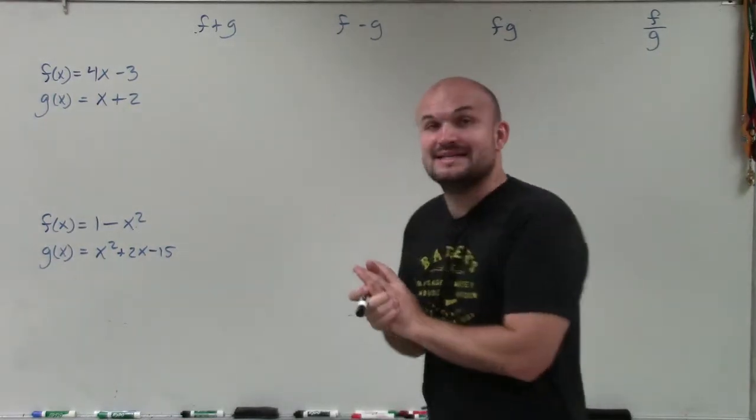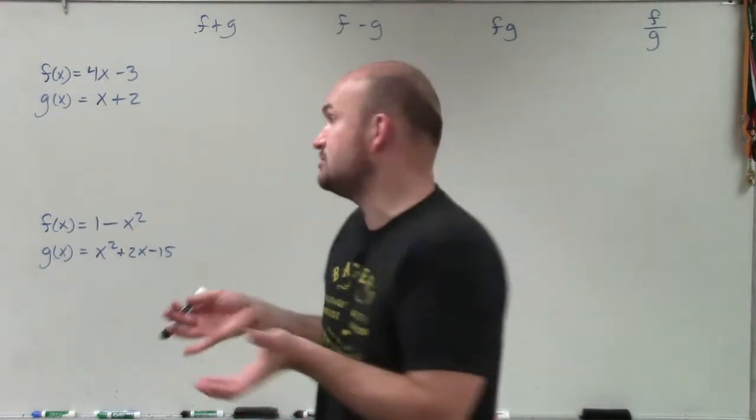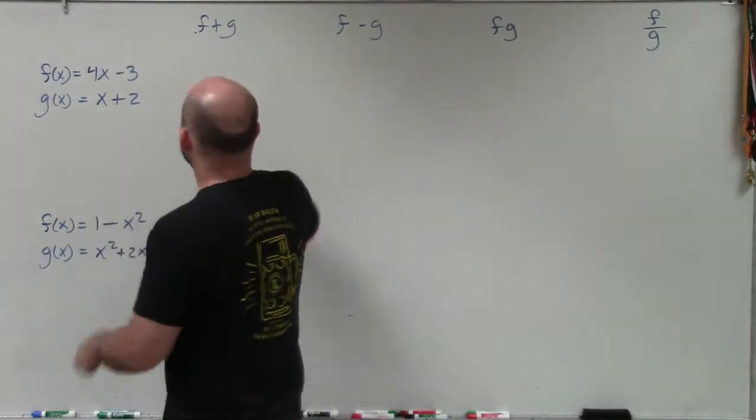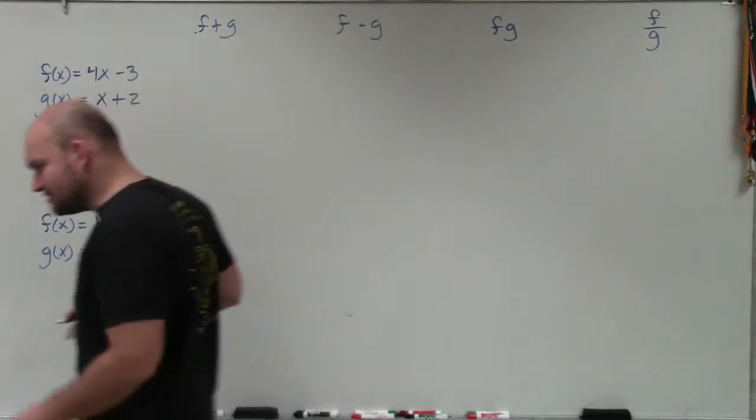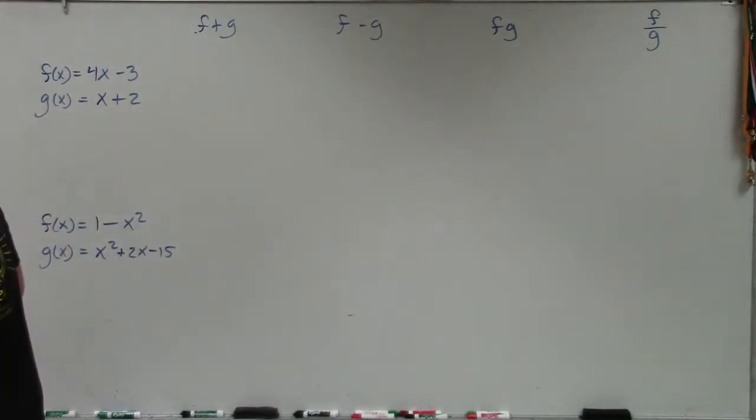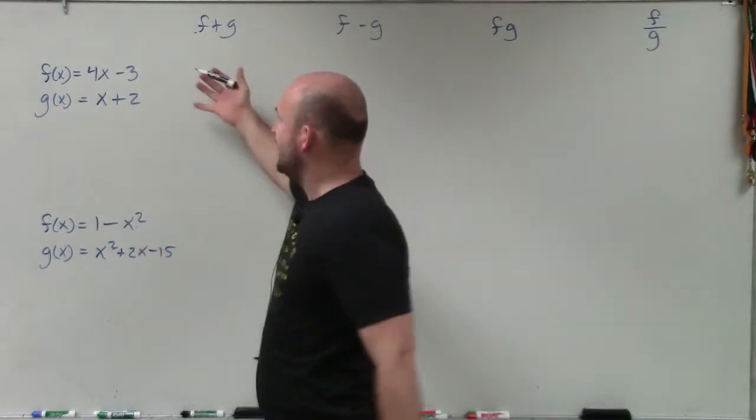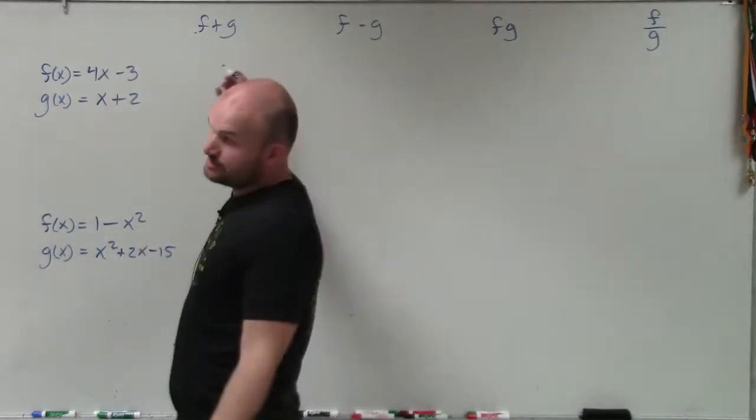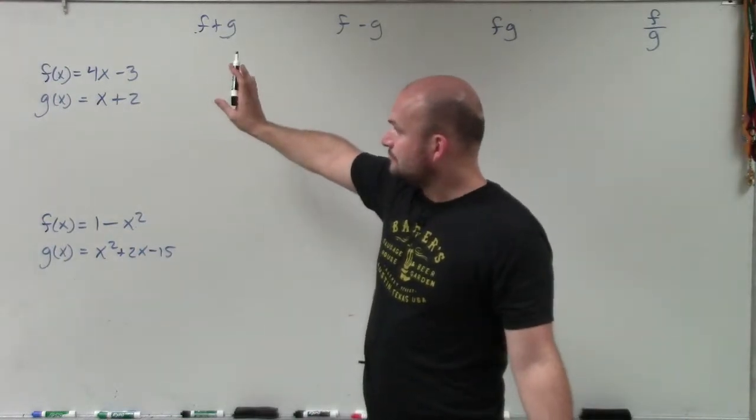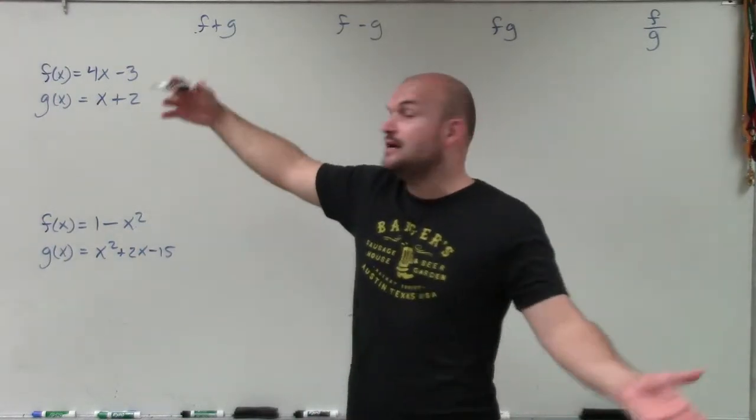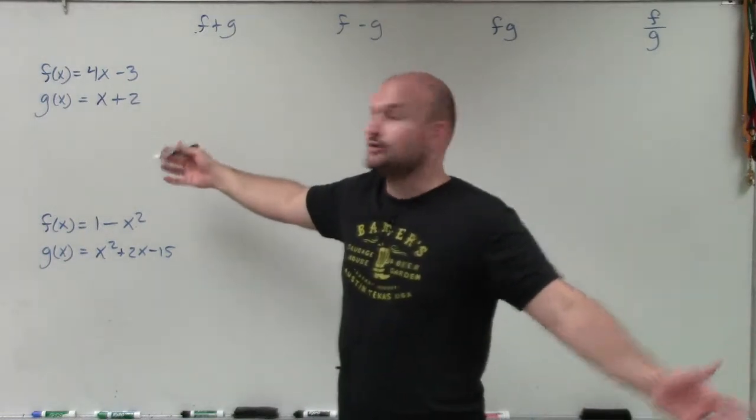So whenever we're looking into adding functions, basically what we're doing is we're adding the terms that the functions are equal to. So if I want to find out what f plus g is going to be, all I'm simply going to do is add what my two functions equal. And the easiest way to really do that, especially when you're dealing with polynomial expressions, is just to add your like terms.